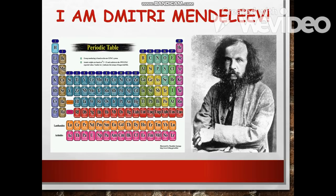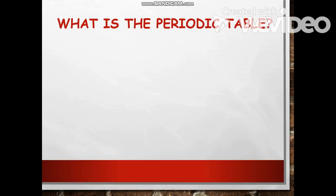This is Dmitri Mendeleev, or Dmitri Ivanovich Mendeleev. He created the first accepted version of the periodic table, which is why he is called the father of the periodic table of elements. He grouped elements according to their atomic mass, and as he did, he found that the families had similar chemical properties, so blank spaces were left open to add new elements he predicted would occur.